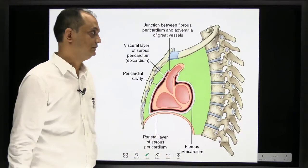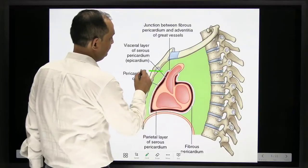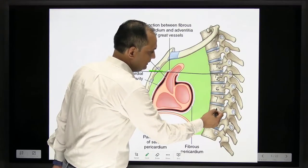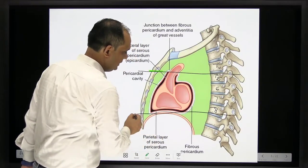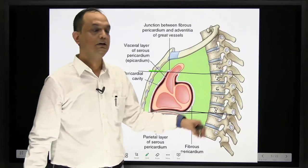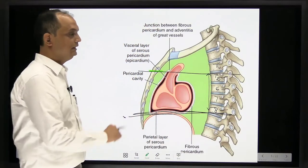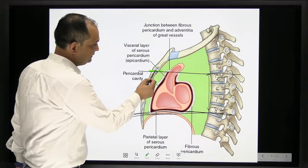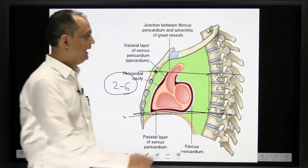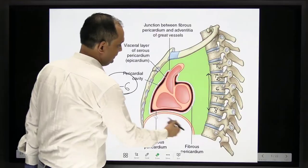In the diagram, the manubriosternal junction corresponds posteriorly to the T4–T5 level. From T5, the heart extends down to T8, where it ends at its lower border, and the pericardium also ends at this level. So the vertebral level of pericardium is T5 to T8. Anteriorly, the second to sixth costal cartilages are in contact, and posteriorly the T5 to T8 vertebrae.